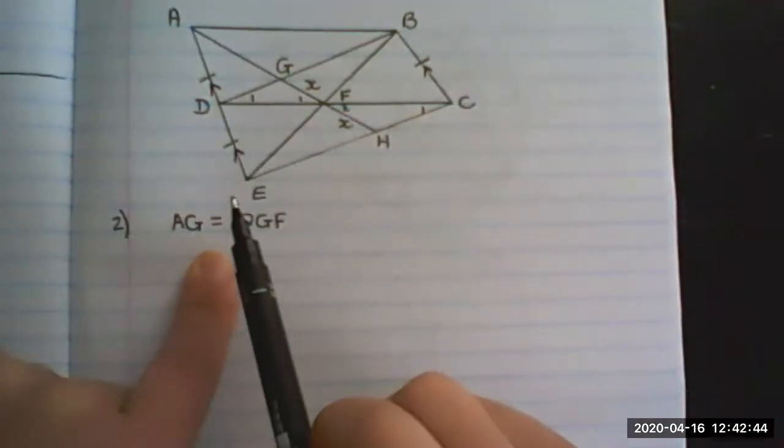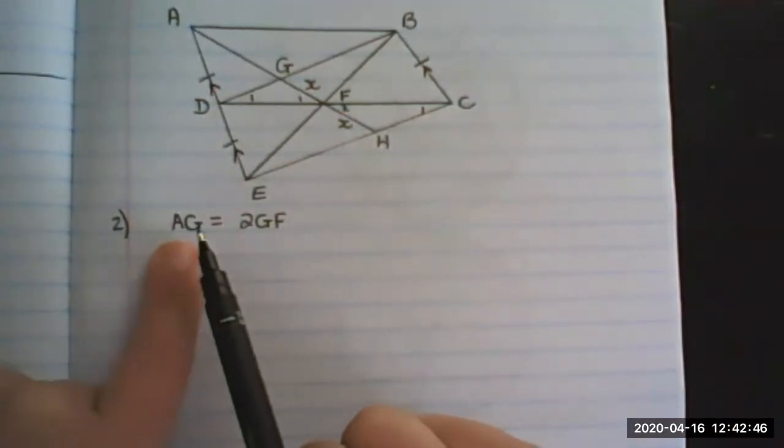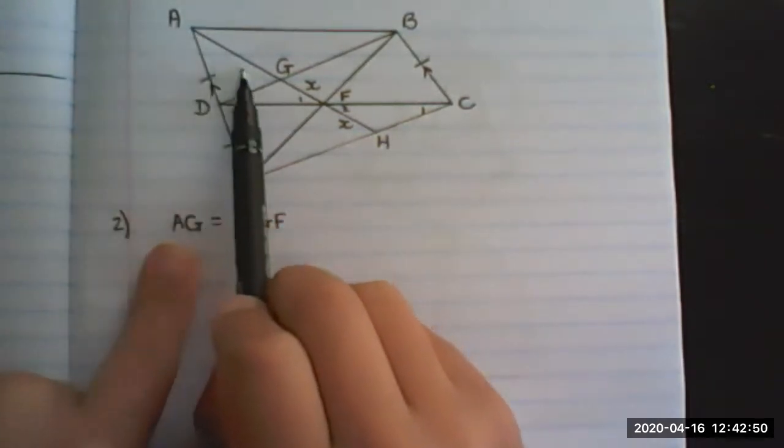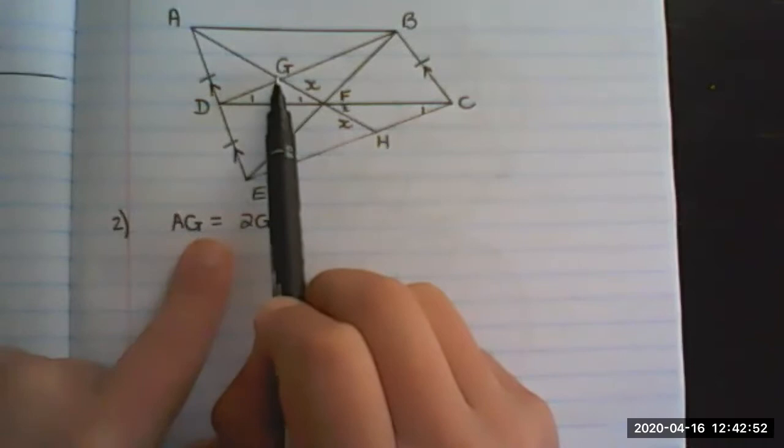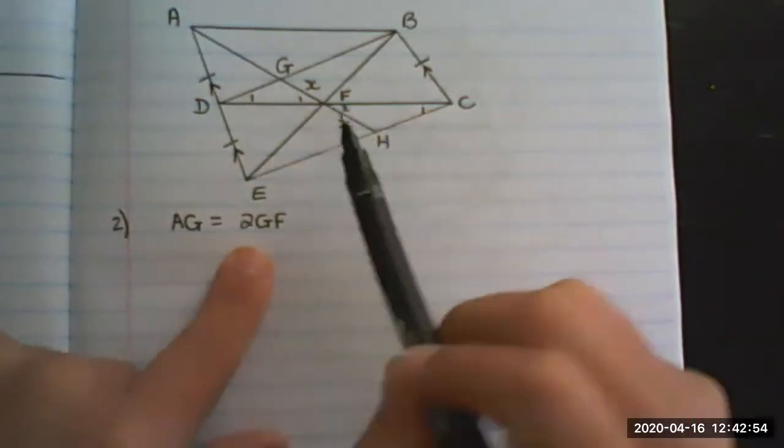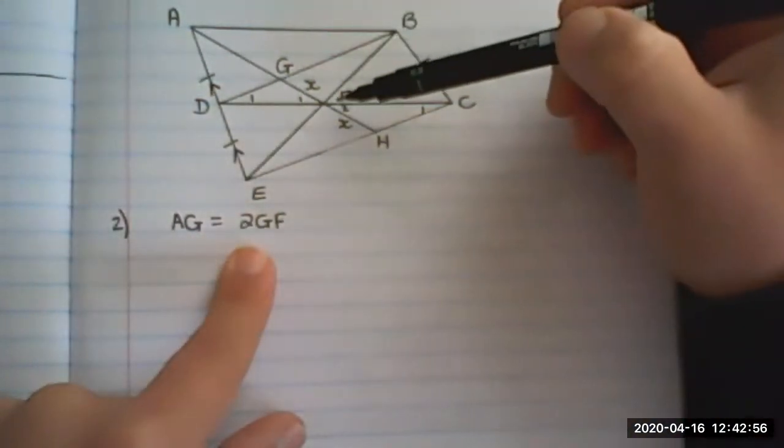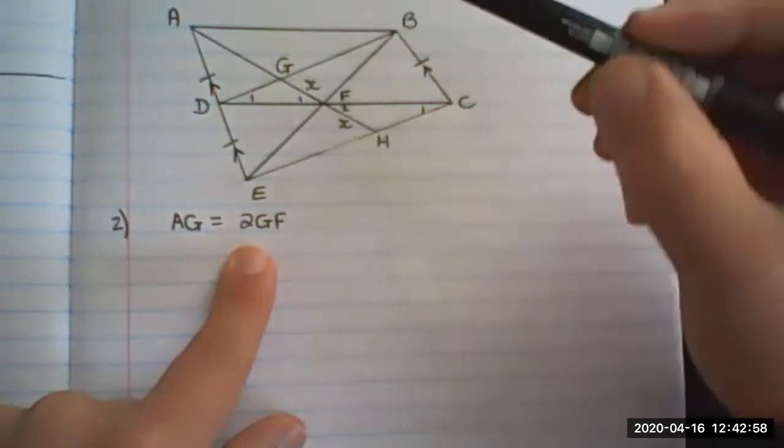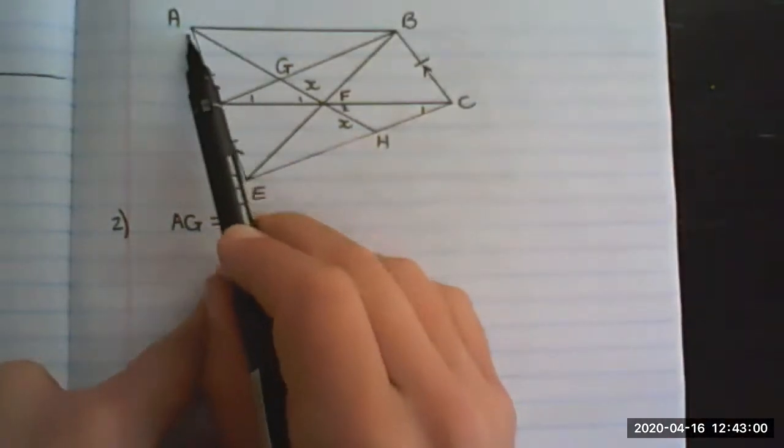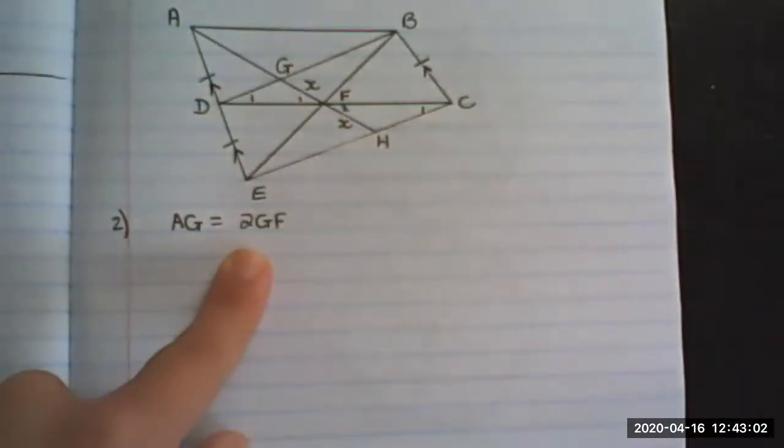Now the question is prove that the line AG is equal to 2GF. So 2GF is that, so basically we want to prove that AG is equal to 2x.